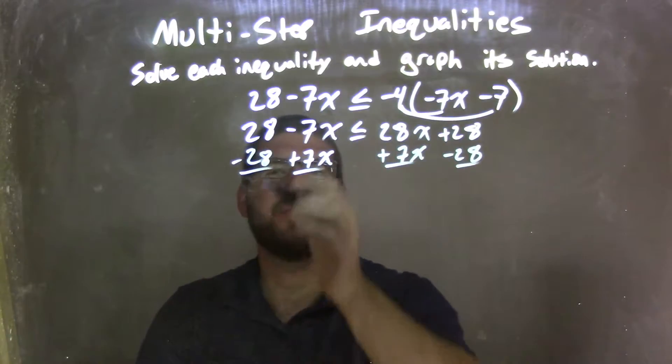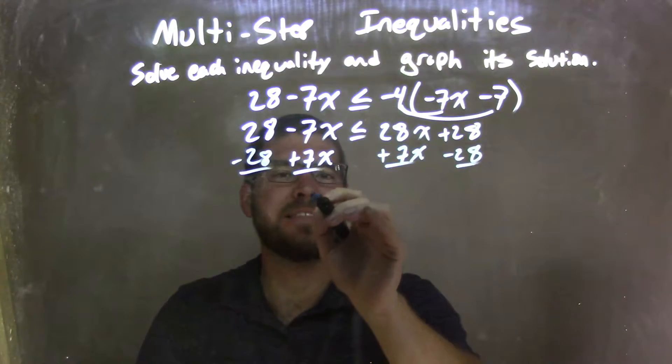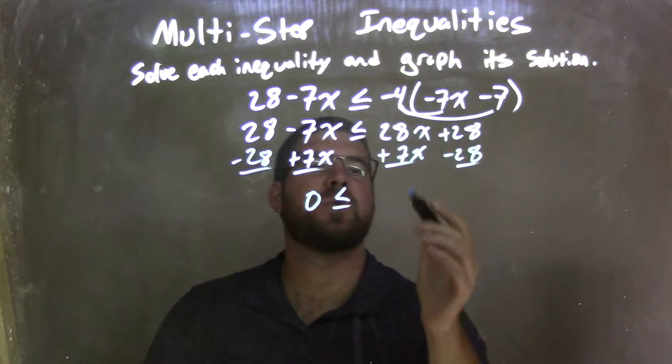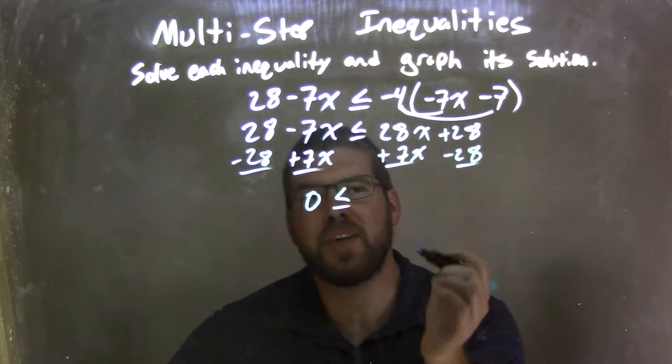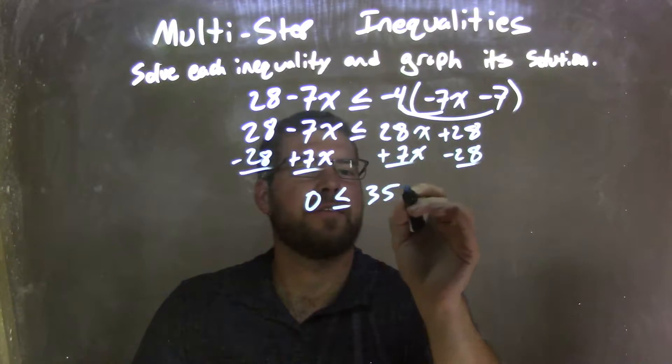And what that leaves me here is 28 minus 28, which is 0, is less than or equal to 28 plus 7, which is 35x.